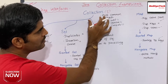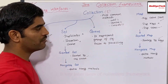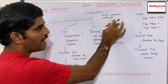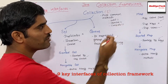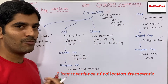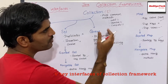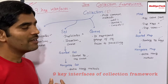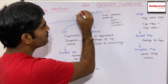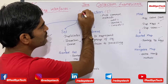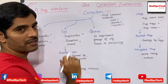The Collection interface defines the most common methods like add, remove, and contains. If you use the add method, you can add an object. If you use the remove method, you can remove an object from that particular collection. And if you want to check whether an object already exists, then you can use contains. So this is the first interface — Collection — and under it we have multiple interfaces.